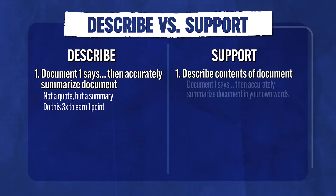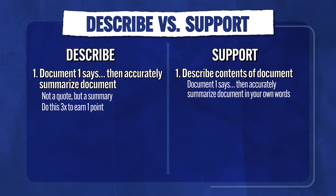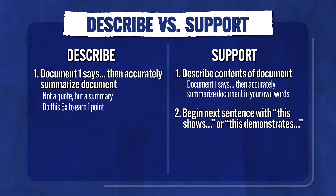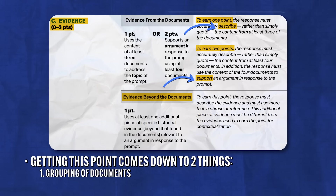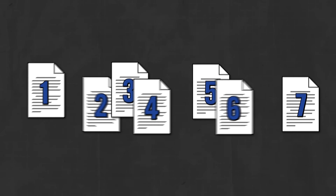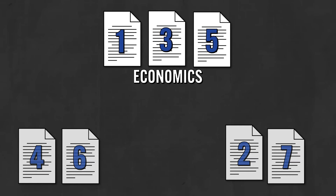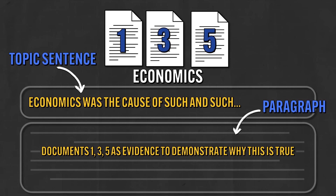To use at least four documents to support an argument: first, describe the contents of the document — accurately summarize it in your own words. Then begin the next sentence with 'This shows' or 'This demonstrates,' and write about how that document proves your thesis. You've always got to be tying your evidence back to your thesis. The key to getting this point comes down to two things: first is the grouping of the documents, which I already talked about. Second is topic sentences. For example, if I grouped documents one, three, and five as economic documents, I'd start with a topic sentence explaining why economics was the cause of such and such, and then use those documents as evidence within the paragraph.